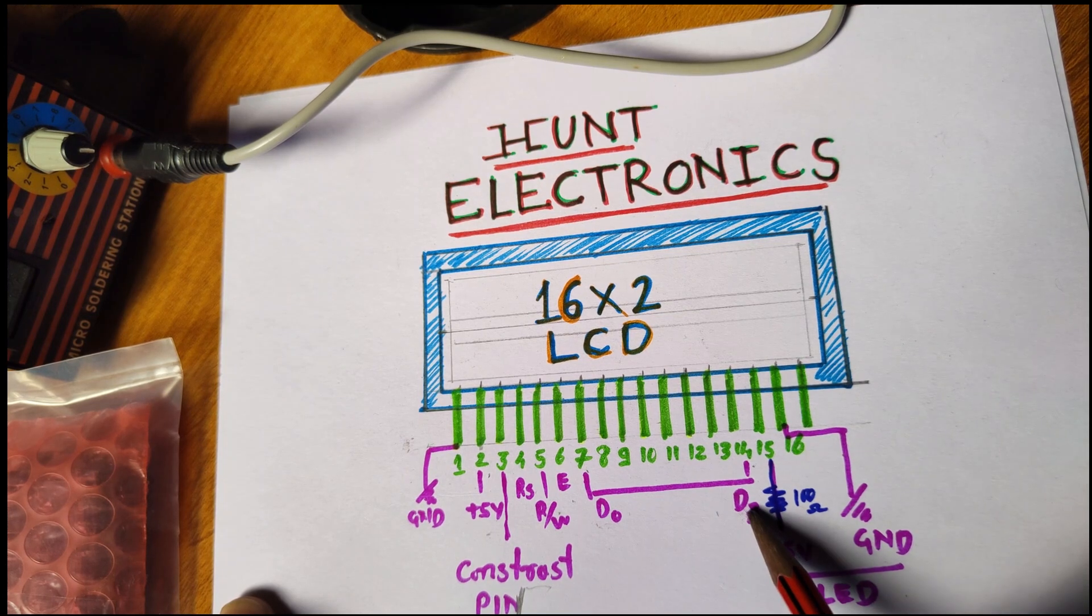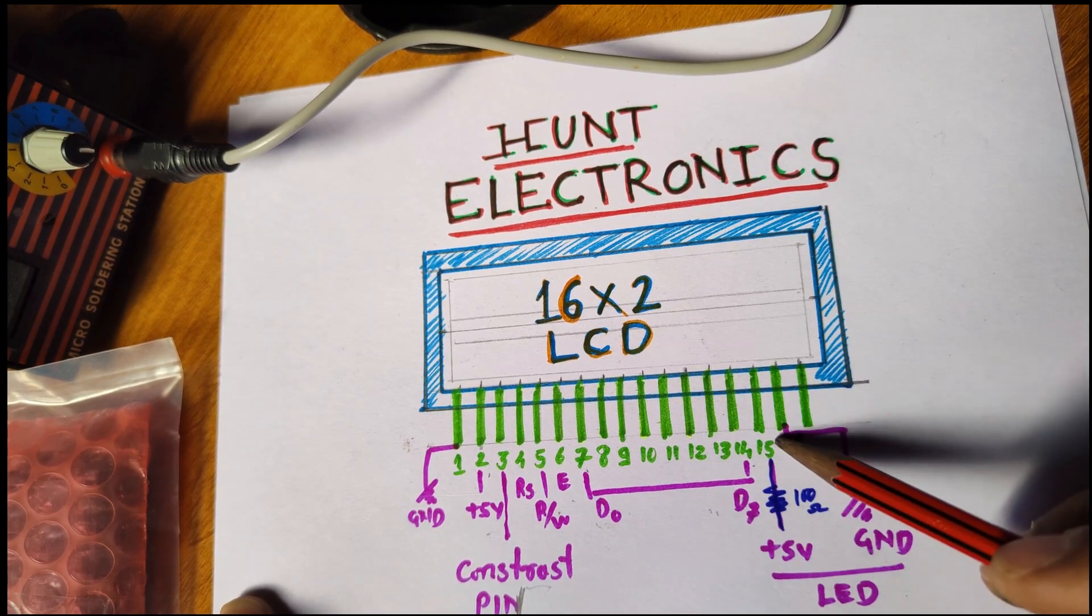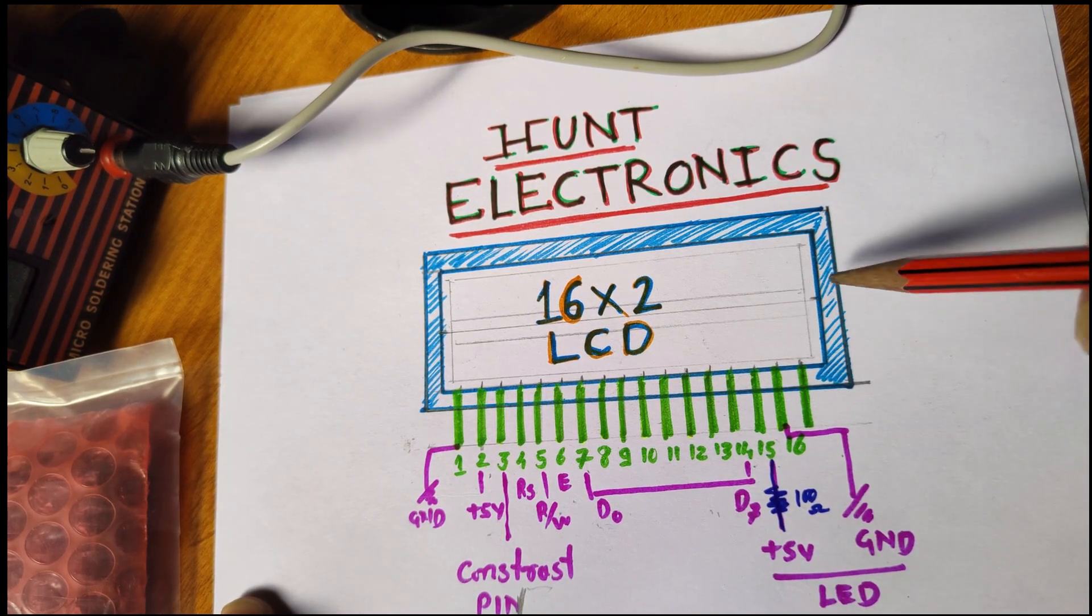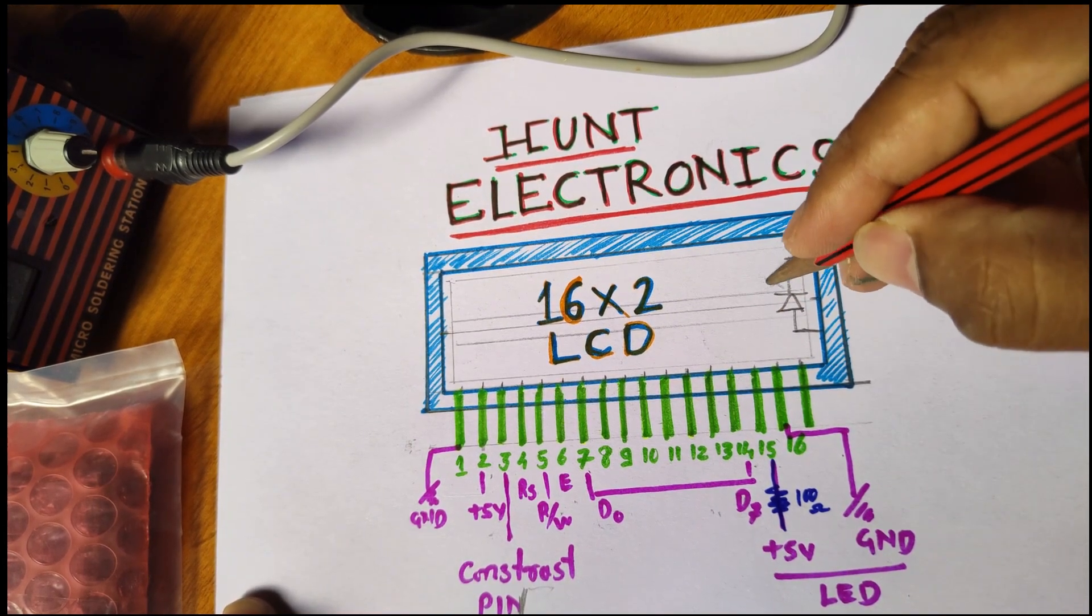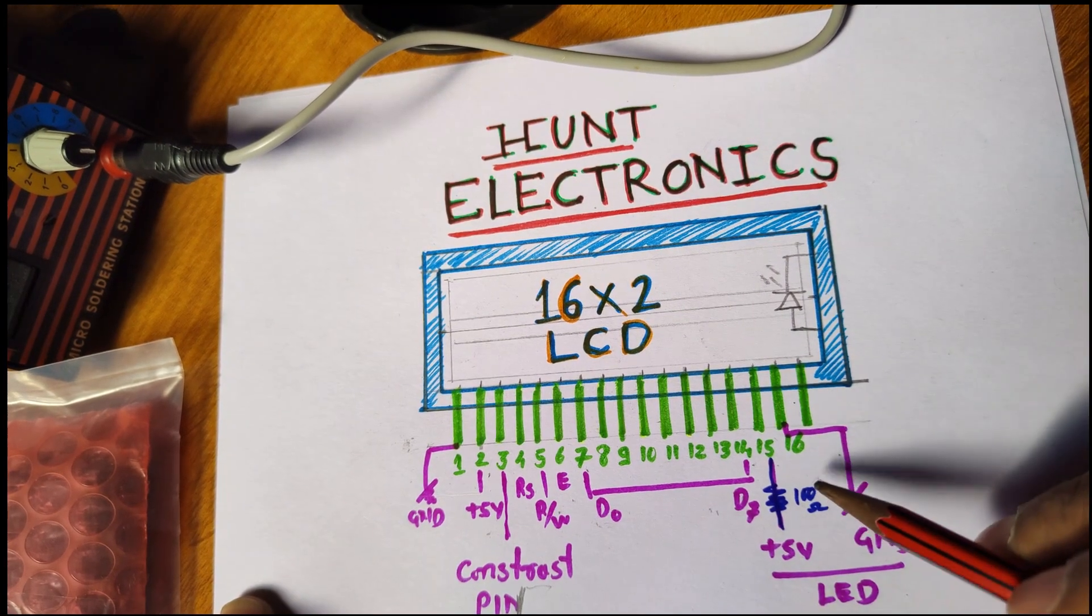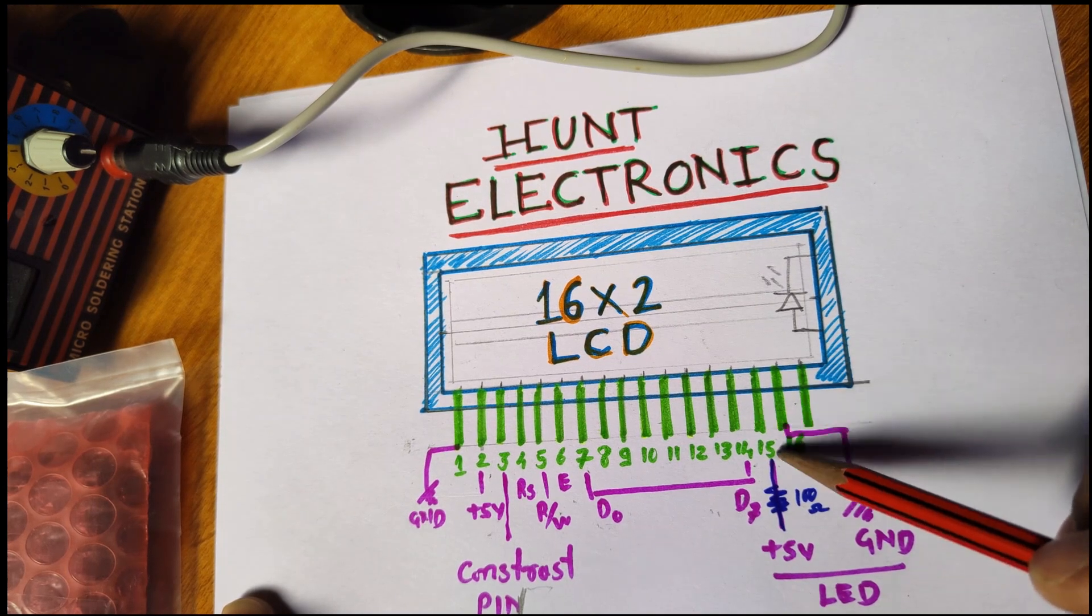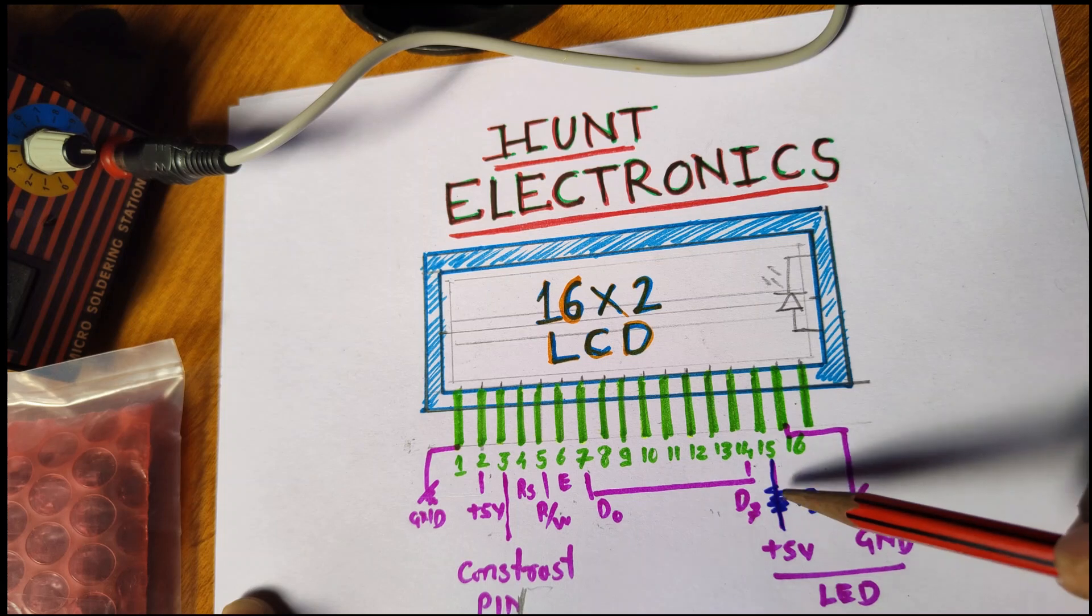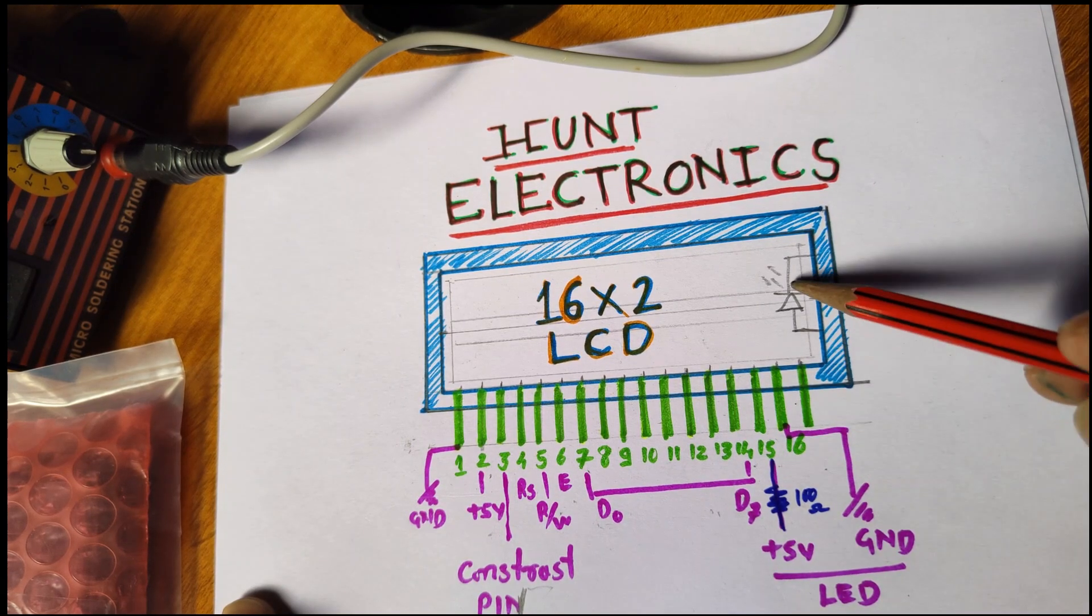There are eight data pins. Pin number 15 and 16 - every LCD has got one LED at the backlight which turns on. One precaution should be taken: there should be a 100 ohm resistor at the input of pin number 15 to protect the backlight LED.